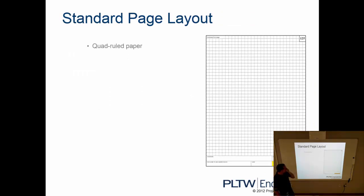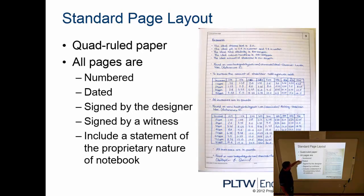Your standard page is going to be quadruled paper. Quadruled simply means that it's graph paper. All pages are going to be numbered. Yours have already been numbered for you. So that's a nice thing. You're going to date the entry. So as I'm working on it, I'm including today's date. Signed by the designer. The designer is always going to be you. You're considered the designer. And then signed by a witness. The witness is going to be if you're working with a partner on the activity, then you would witness each other's notebook. Working on the same project, I'm a witness to that. Include a statement of proprietary nature of the notebook. That simply means that the content of the notebook is proprietary or belongs to you. So this is your work.